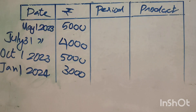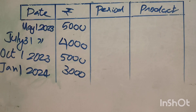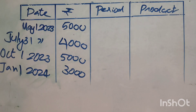The withdrawal dates are: May 1st 2023, July 31st 2023, October 1st 2023, and January 1st 2024. We calculate the period for each withdrawal from the date of withdrawal to 31st March.